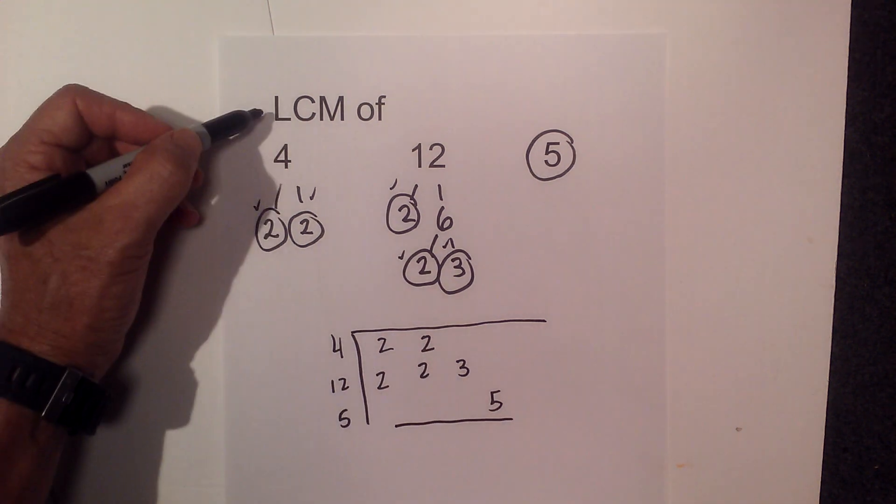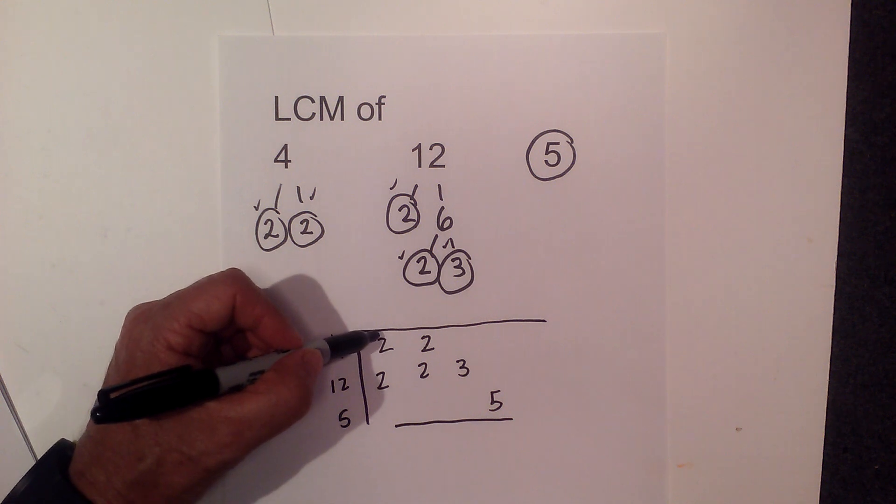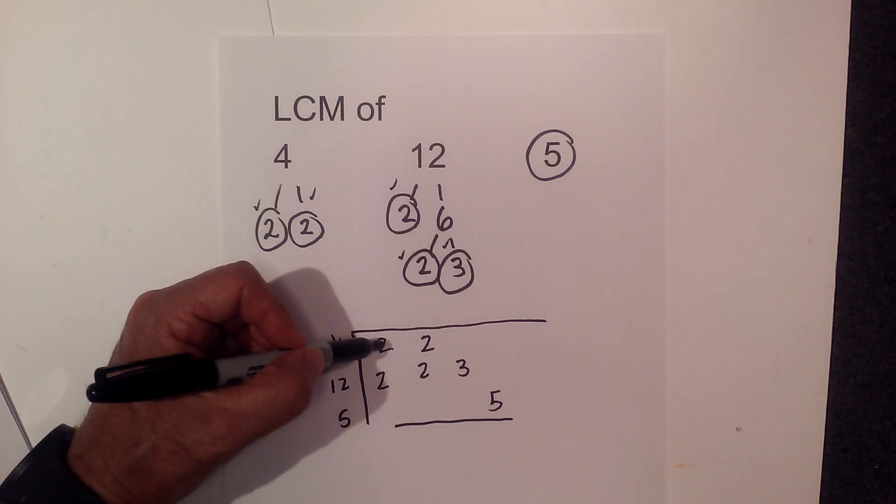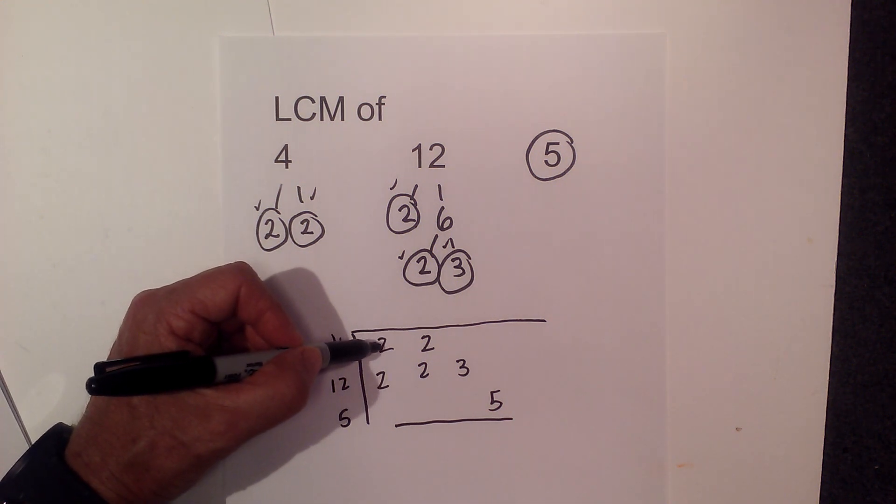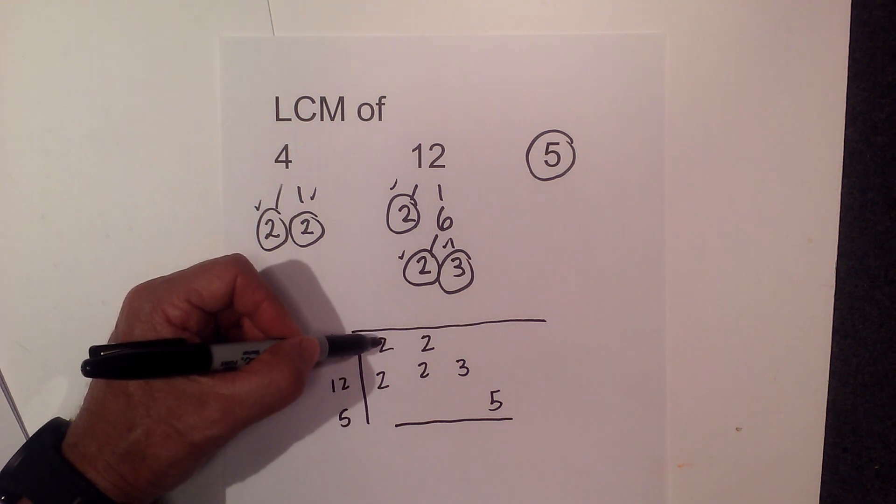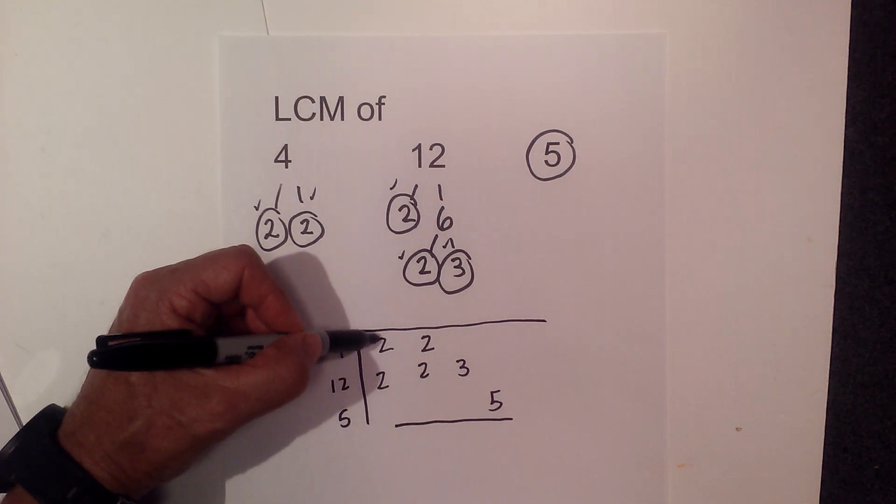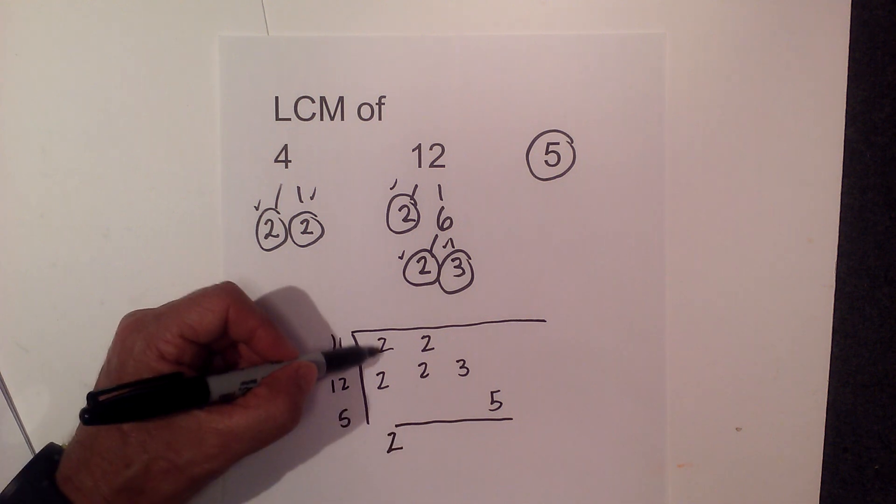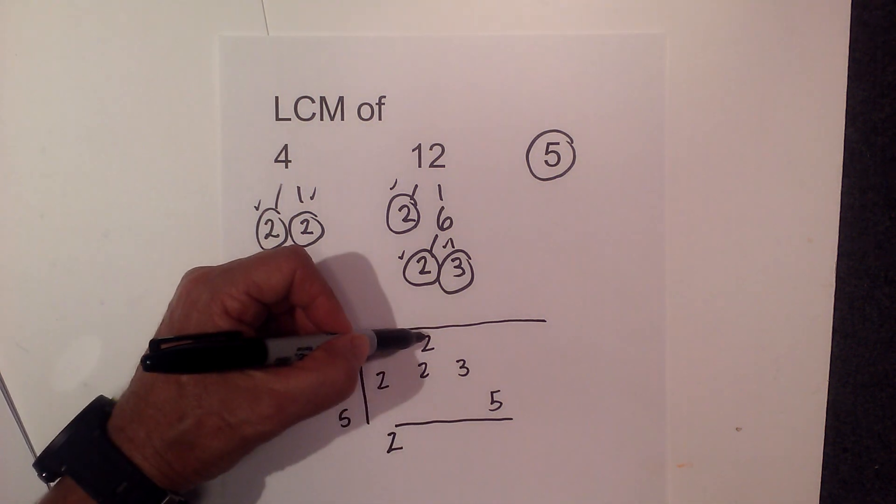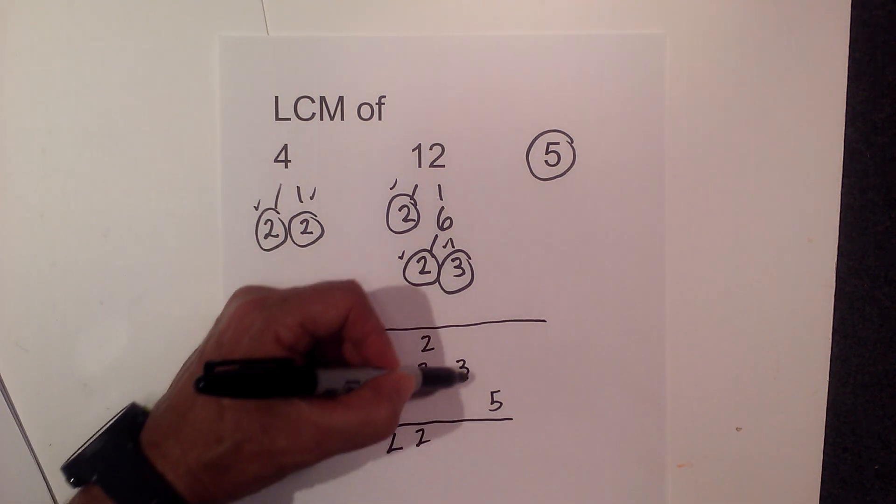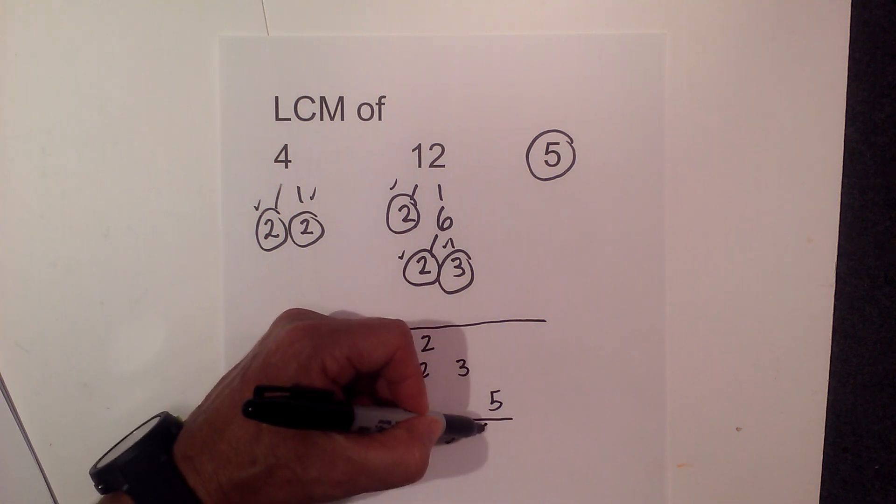Now for the lowest least common multiple all you do is pull the numbers down. The rule is though if you have more than one in any column just use 1. So I'm gonna write 1 because although there's 2 in this column just use 1, 2, and then the same here, and then 3, and then 5.